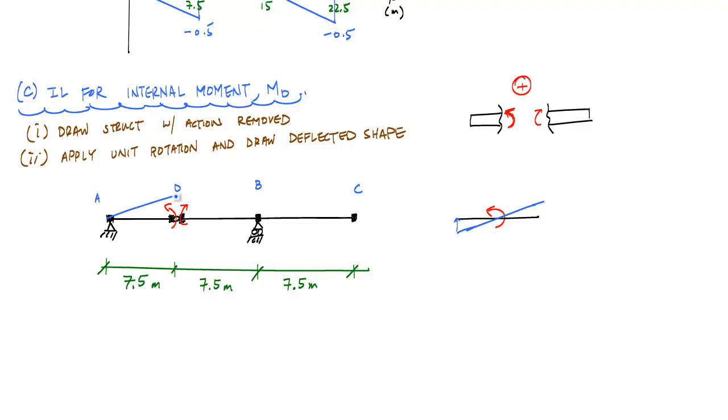And here, segment DBC is going to rotate clockwise, but I have to make sure point B remains grounded or has zero displacement, which means the whole thing just rotates up together, and I have to make sure that the deflected shape passes through point B.